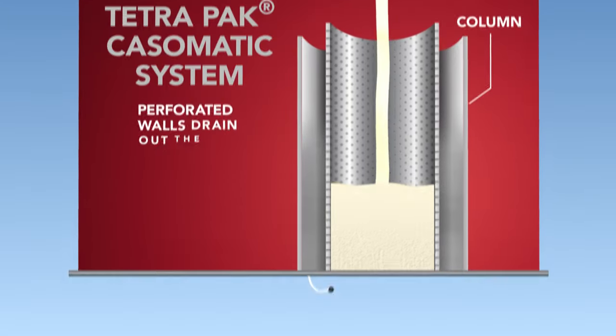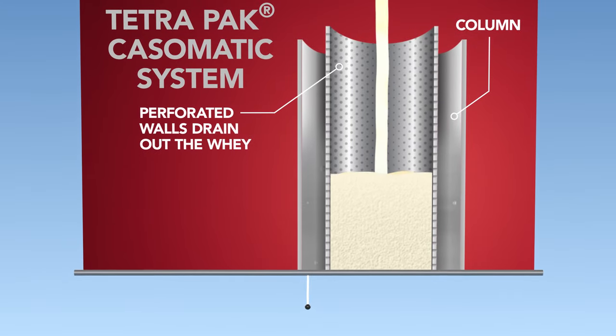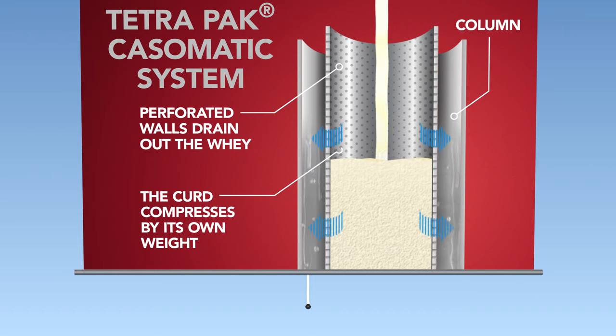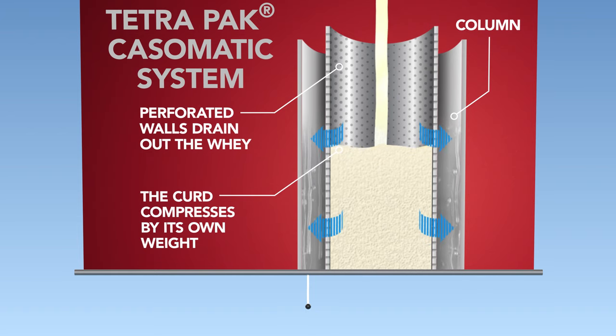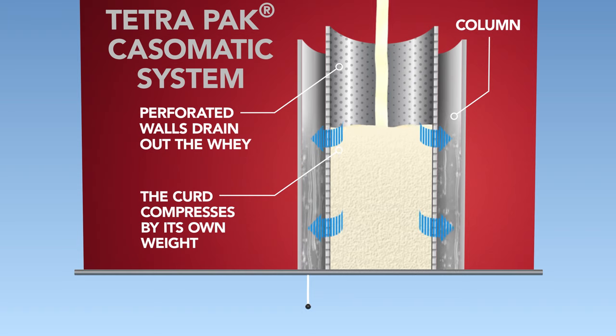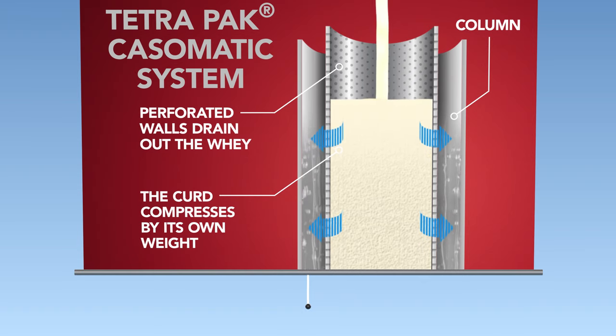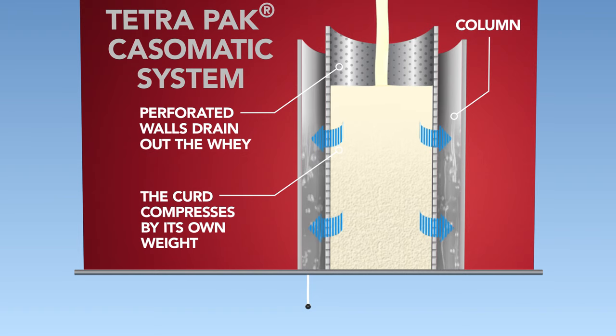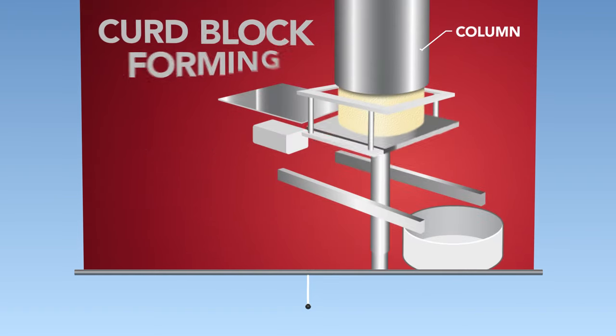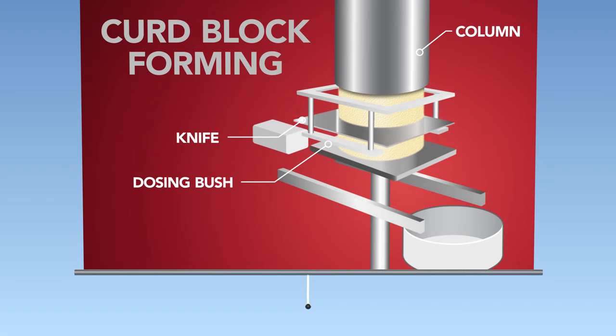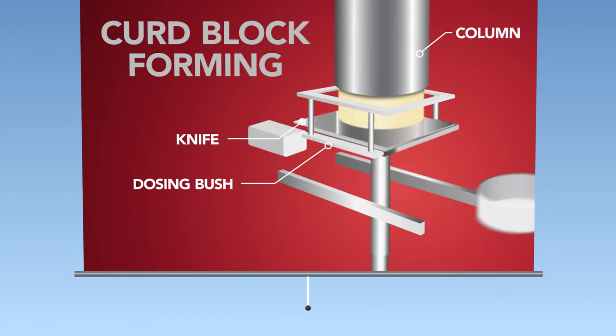Here's how it looks. The mixture of curd grains and whey is fed from the buffer tank into the column from the top. As it travels down the column, the whey is drained in three perforated sections at different levels. The more whey is drained from the curd, the more it compresses. At the bottom of the column, the curd is cut and emptied into a mould, where the curd is pressed, forming a block or a wheel.